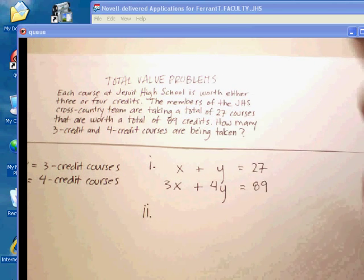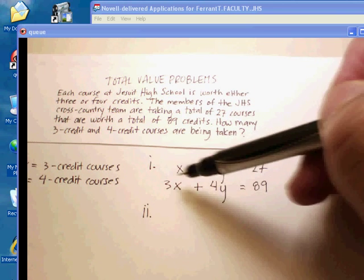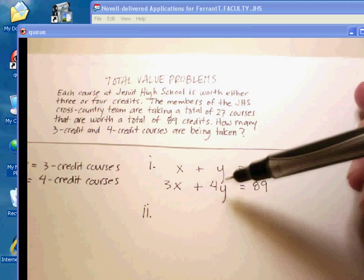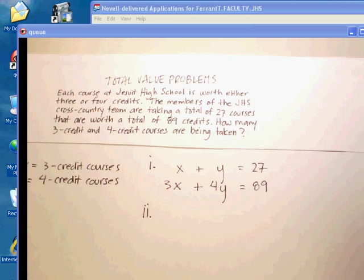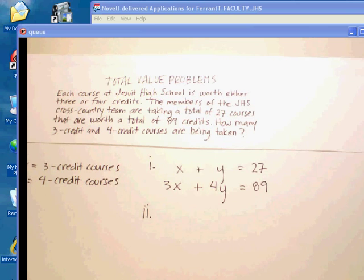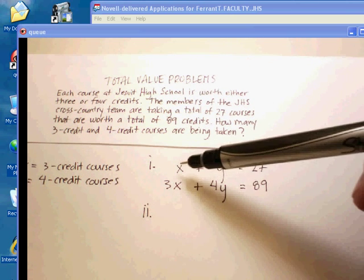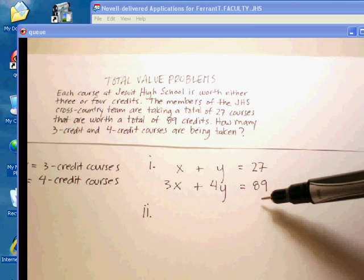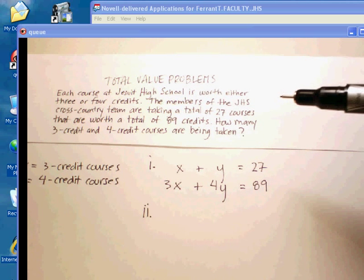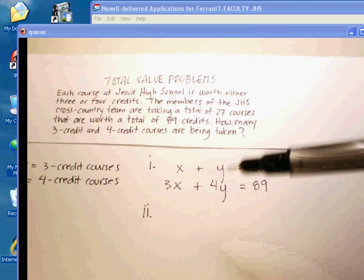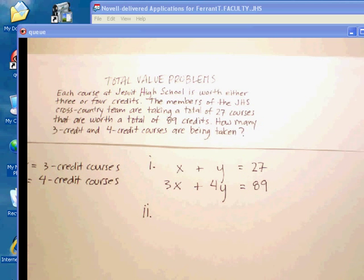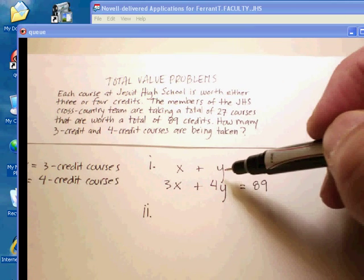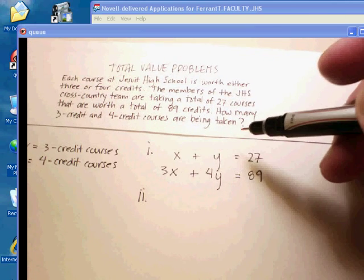With elimination, remember, we have to eliminate one of these variables. And we want to either add or subtract the two equations so that one of the variables will disappear. Now, when I look at this, if I were to add this, I would have 4X plus 5Y equals 116. That didn't eliminate anything. I want to eliminate one of these variables. I'm going to choose to eliminate the X. I could eliminate the Y, but I'm going to eliminate the X.